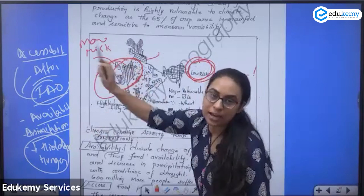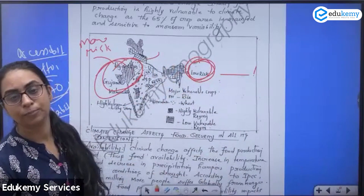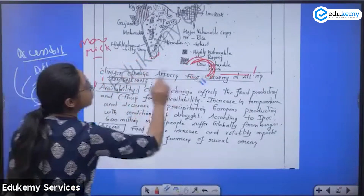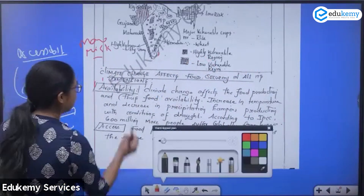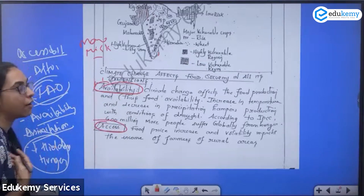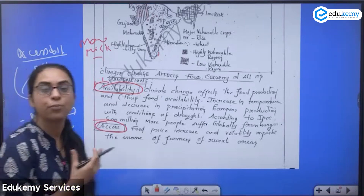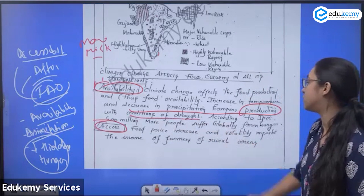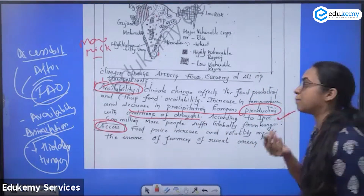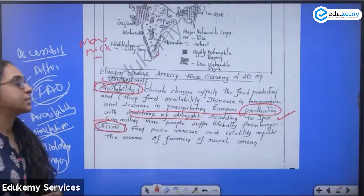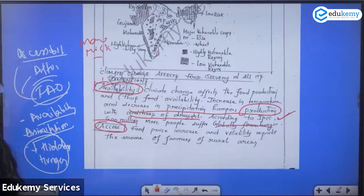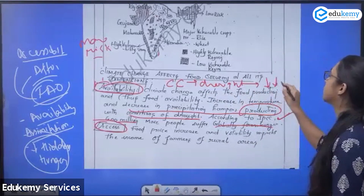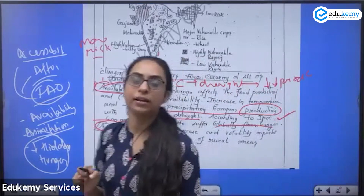You can substantiate the wet-low-risk and dry-high-risk contrast with a diagram. Then come to the main demand: climate change affects food security in all its dimensions — availability and accessibility. Regarding availability, decreased precipitation leads to drought, reducing crop production. The IPCC says nearly 600 million people suffer from hunger globally. More drought means less production, so availability of food is directly impacted.